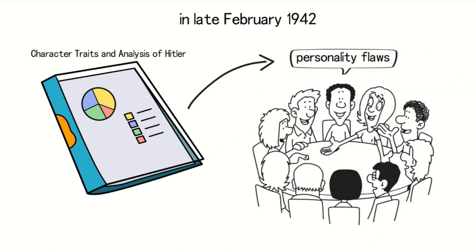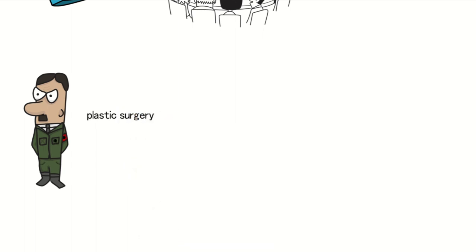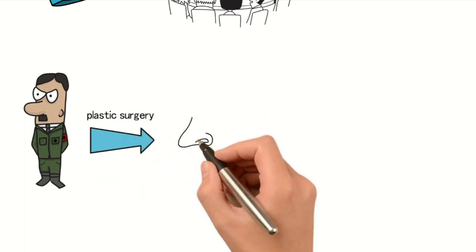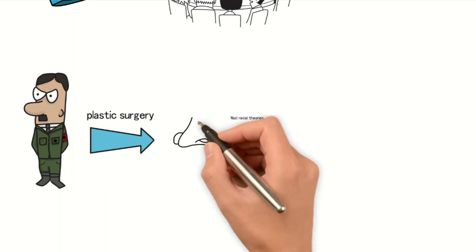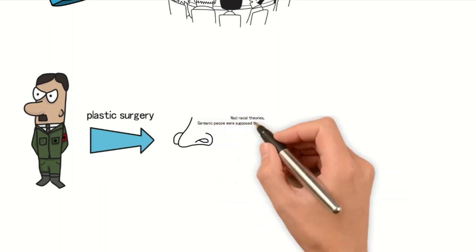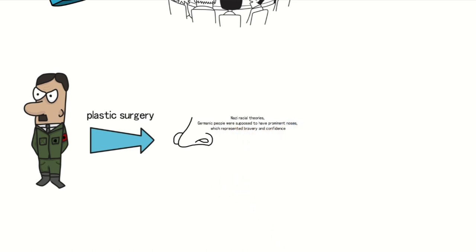One of Hitler's significant habits was plastic surgery. He had a particular fondness for his nose because according to Nazi racial theories, Germanic people were supposed to have prominent noses, which represented bravery and confidence.